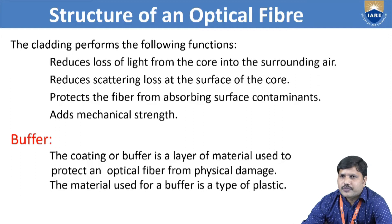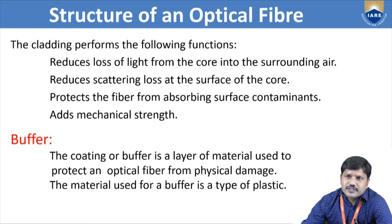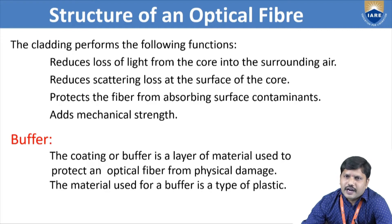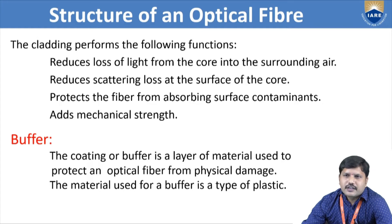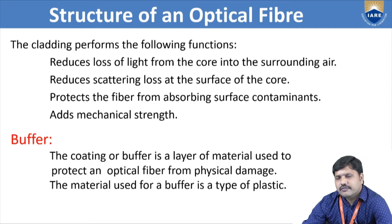So these are the three different layers in optical fiber — the construction of optical fiber in our structure. Just as we have seen: first is core, second layer is cladding, and third is buffer jacket. Core, cladding, and jacket — these three are the parts in our optical fiber, and through the core only, which is the central part, the total data or light can transfer.